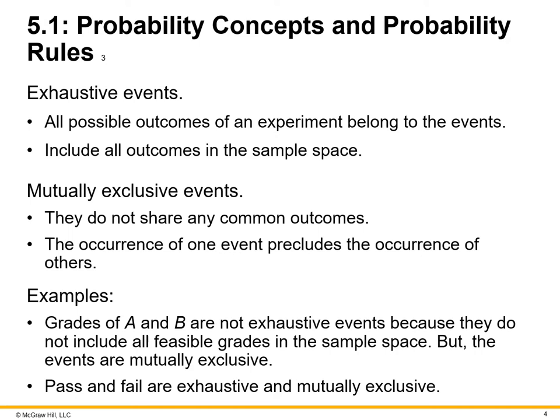There are also things called exhaustive events in probability. It's all possible outcomes of an experiment belonging to the events. It includes all outcomes in the sample space. Grades could definitely be something that is a determination of pass or fail. There's also mutually exclusive events. They do not share any common outcomes. The occurrence of one event precluding the occurrence of others. For example, grades of A and B are not exhaustive events because they do not include all feasible grades in the sample space. But the events are mutually exclusive. A grade of A and B are mutually exclusive because you will pass the class or not. Pass and fail are exhaustive and mutually exclusive, meaning it's one or the other.